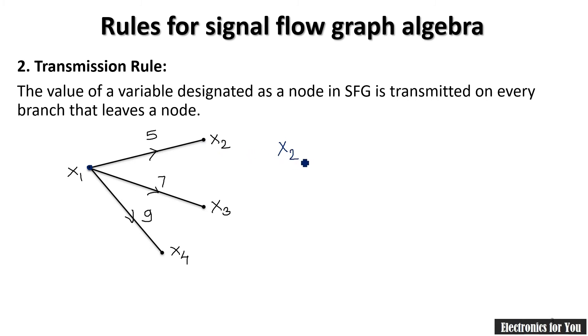x2 is our output signal, and x2 equals input signal multiplied by gain. So gain here is phi u, phi u multiplied by input signal x1. Similarly x3 equals gain multiplied by input, which is 7x1, and for x4 the equation will be 9 multiplied by x1. So this is our transmission rule.